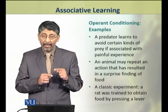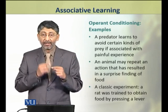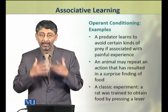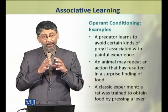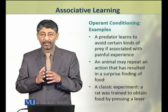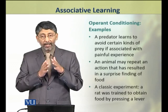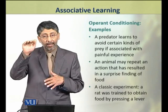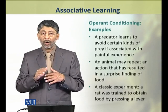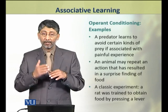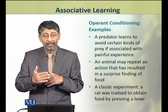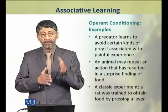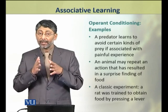इसी तरह से एक animal एक ऐसे तजर्बे को बार बार repeat कर सकता है, जिसके नतिजे में उसे एक दफा अचानक surprise से food मिल गई थी. एक classic experiment इस हवाले से rats पर किया गया था, जिसमें एक rat को train किया गया कि वो एक मुश्किल रास्ते से गुजरते हुए end पर जाके एक lever प्रेस करे, और उसके नतिजे में उसे food मिल जाएगी. Rat ने आइंदा के लिए ये वाली अदत अपना ली. That was an example of operant conditioning.